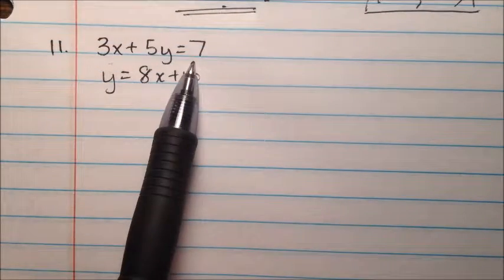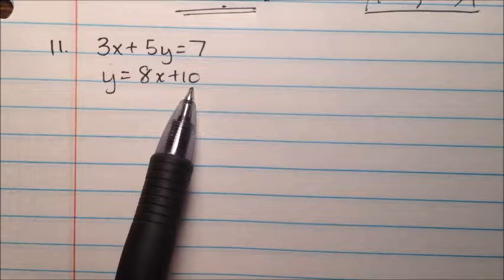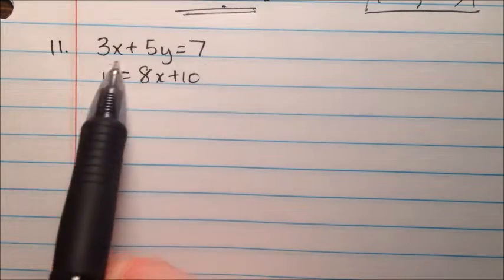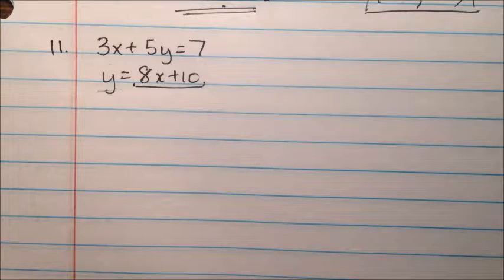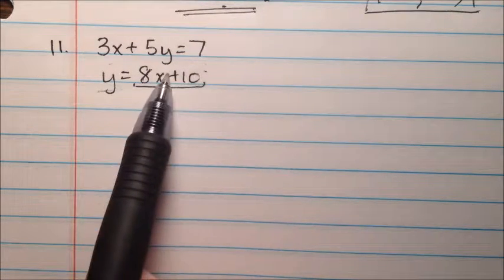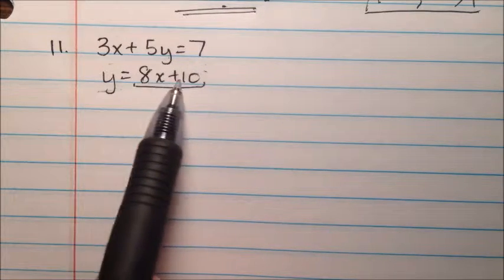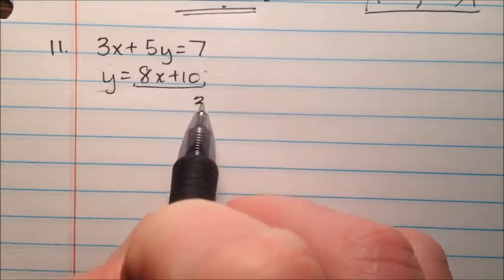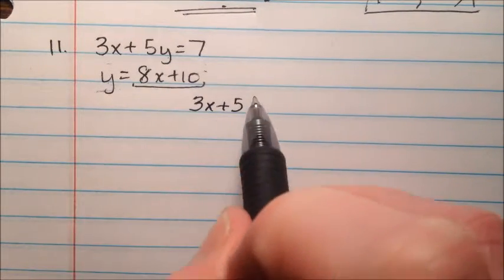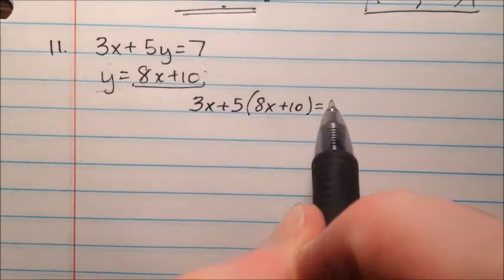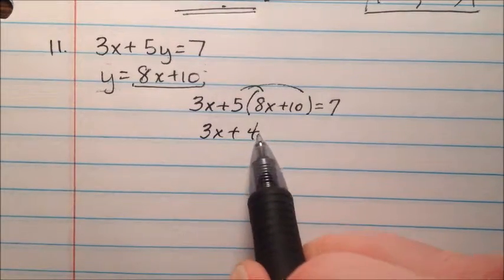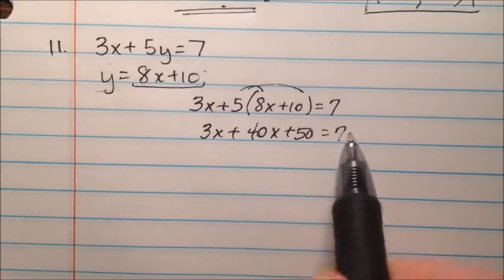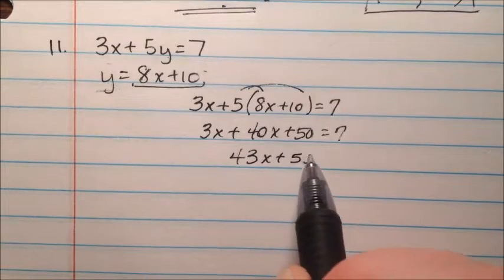Number 11 is 3x plus 5y equals 7, and then y equals 8x plus 10. Using substitution, we take the second equation — which has y all by itself as 8x plus 10 — and substitute it into the first equation for y. So it'll be 3x plus 5 times the quantity 8x plus 10 equals 7. Using the distributive property, that gives us 3x plus 40x plus 50 equals 7, so 43x plus 50 equals 7.